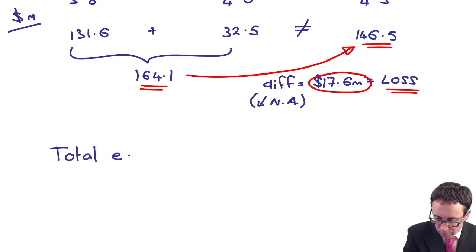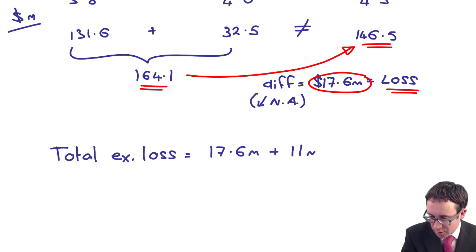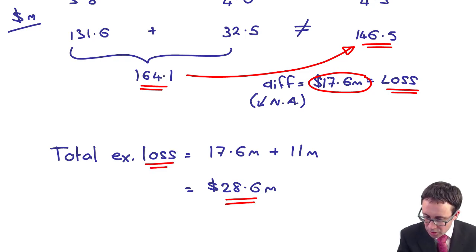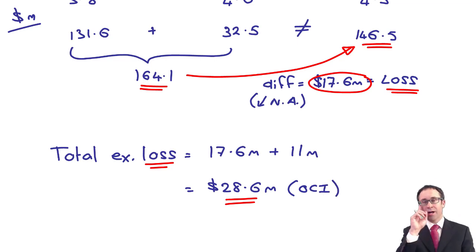So what we've got there is that the total exchange loss is the 17.6 million plus the 11 million, which gives you the, is it 28.6 million. That's your total loss.